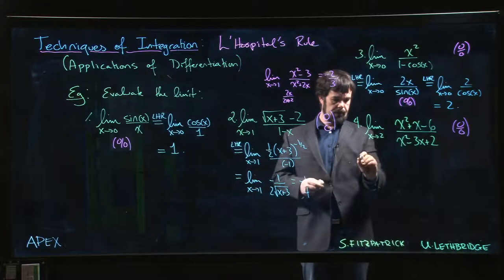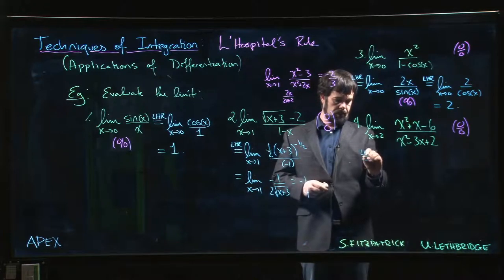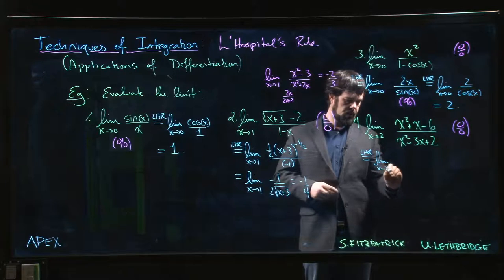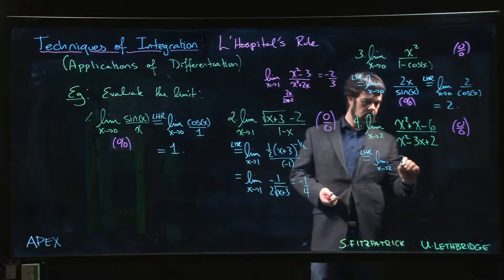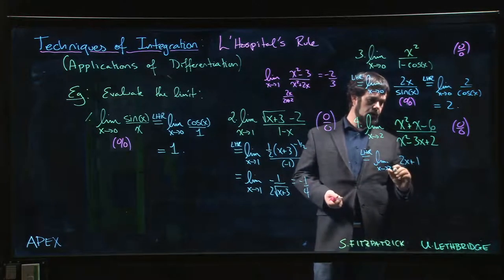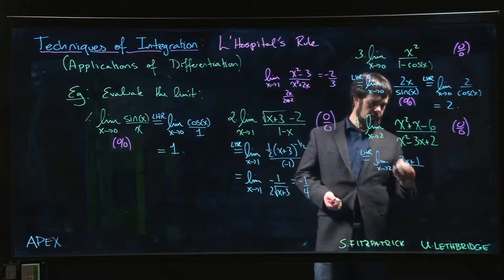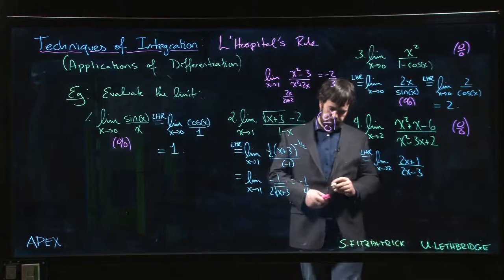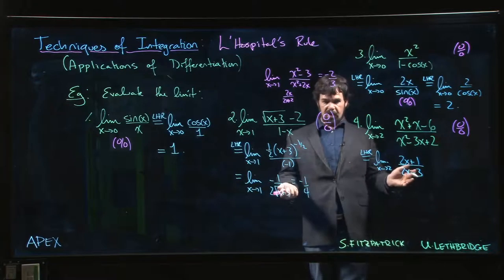So let's use L'Hopital's rule. So we get the limit as x going to 2, 2x plus 1 over 2x minus 3. And now we evaluate.